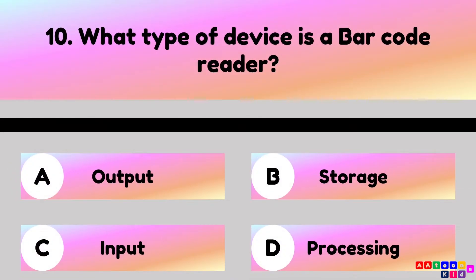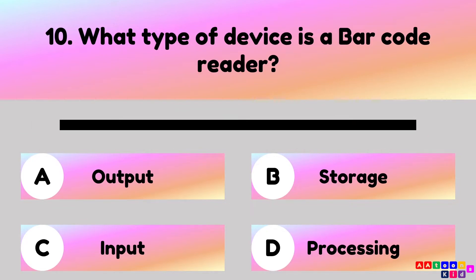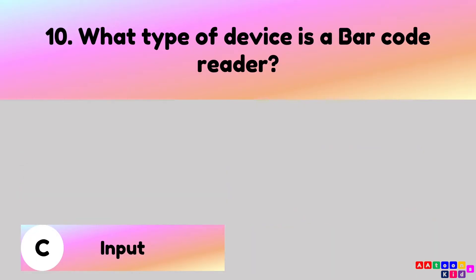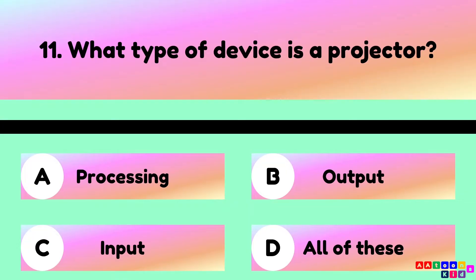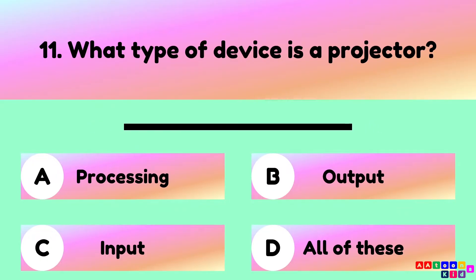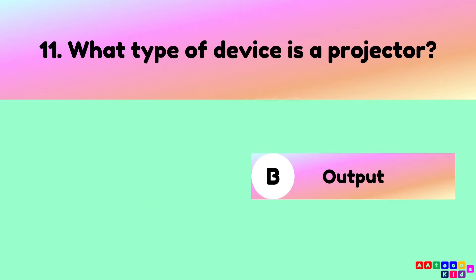What type of device is a barcode reader? A barcode reader is an input device. What type of device is a projector? A projector is an output device.